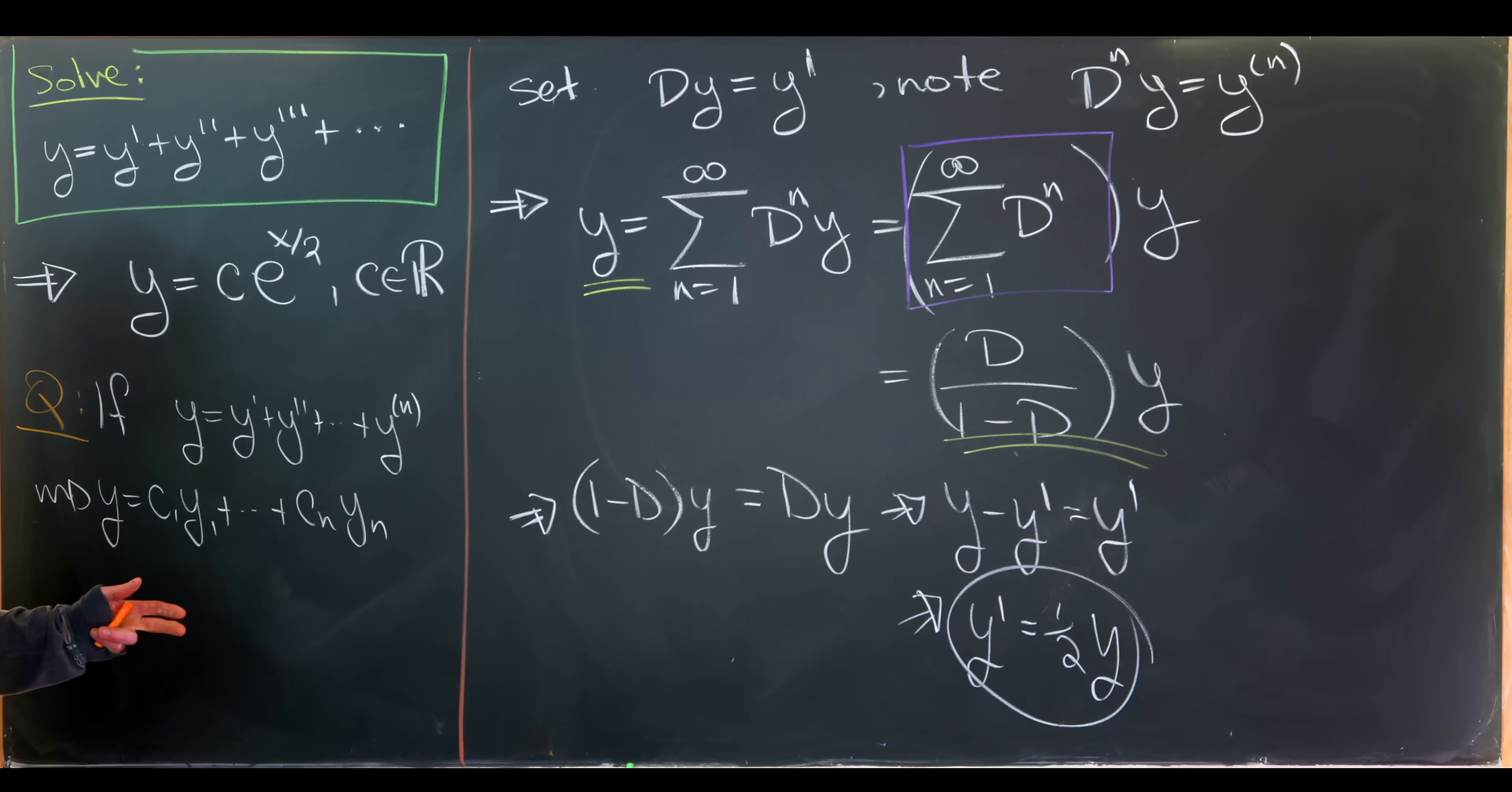So the question to you which I don't immediately know the answer to is why when we truncate this right hand side to a polynomial do we get n linearly independent solutions whereas when we have an infinite sum on the right hand side we get a single solution. It almost feels like we should have an infinite family of solutions instead of this single solution. And we maybe do but perhaps all of the other solutions are maybe functions that are not as nice.